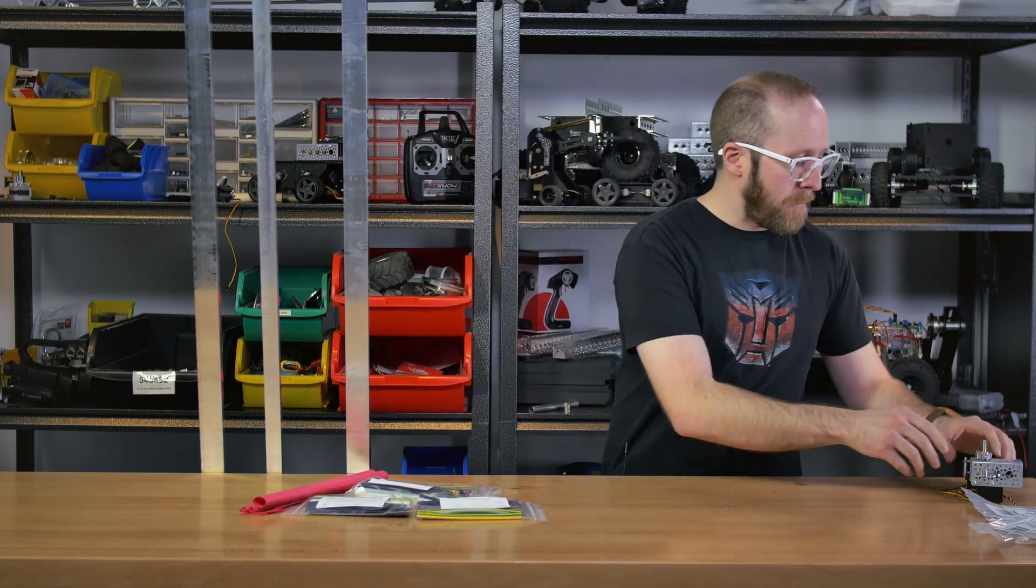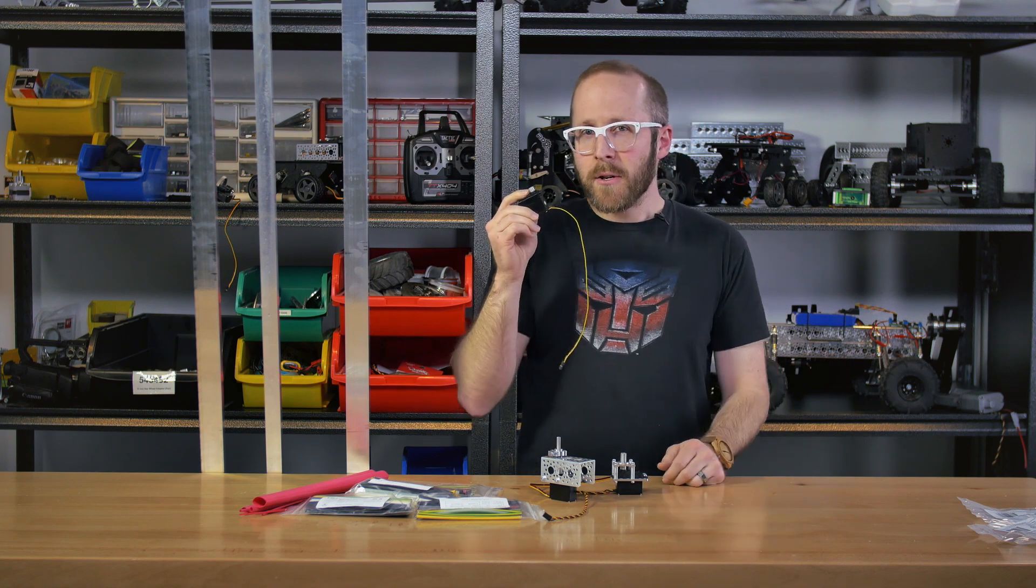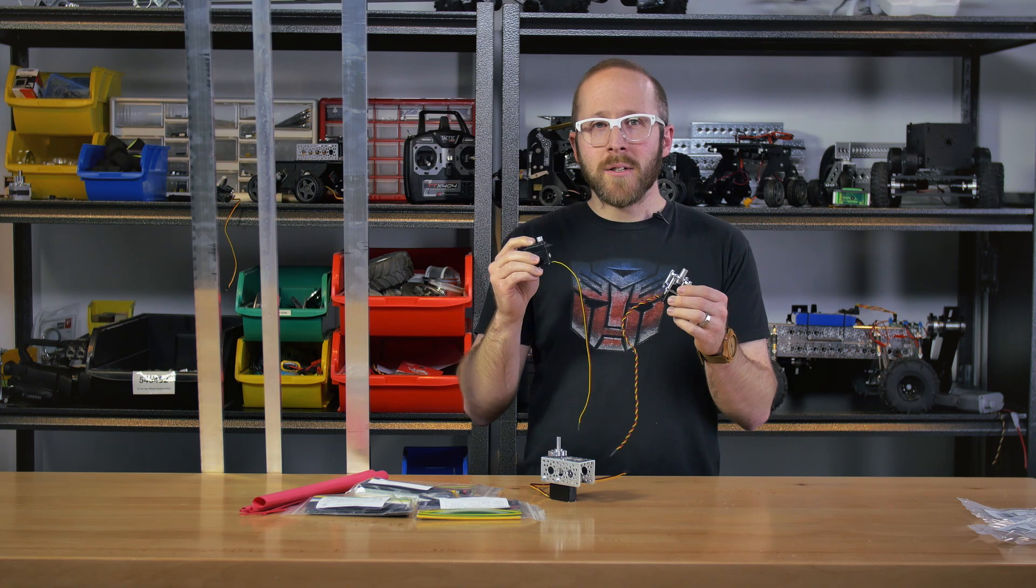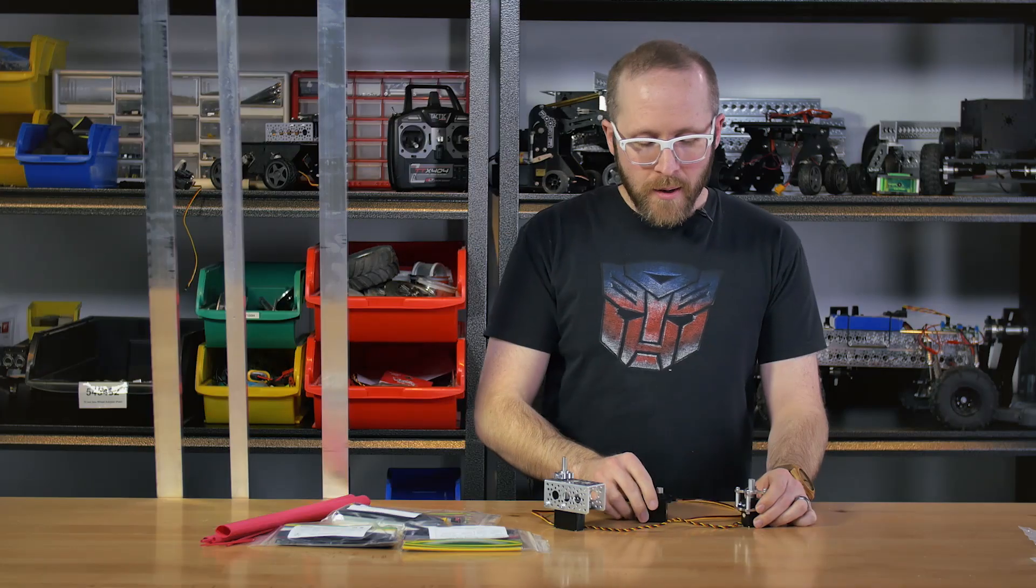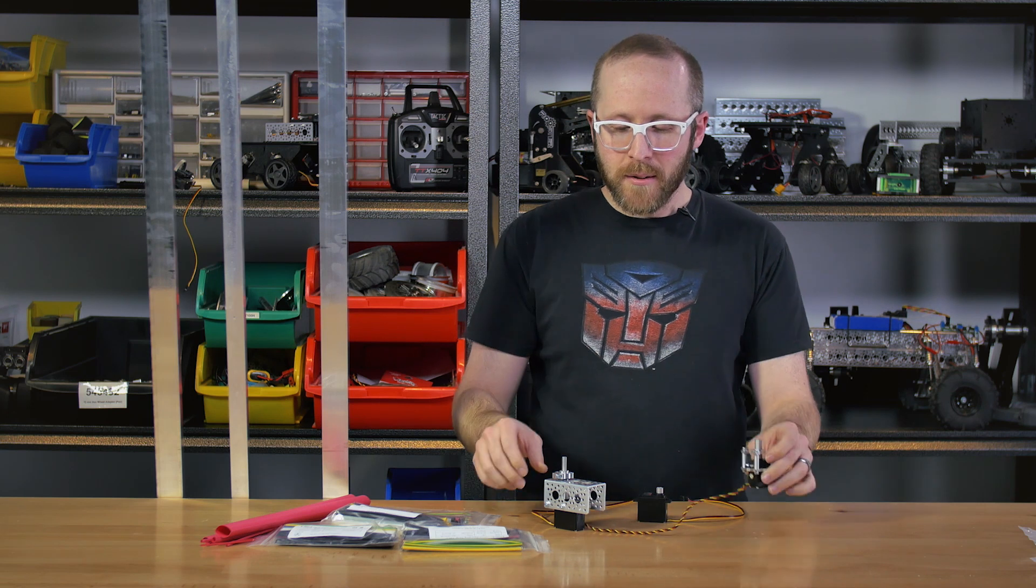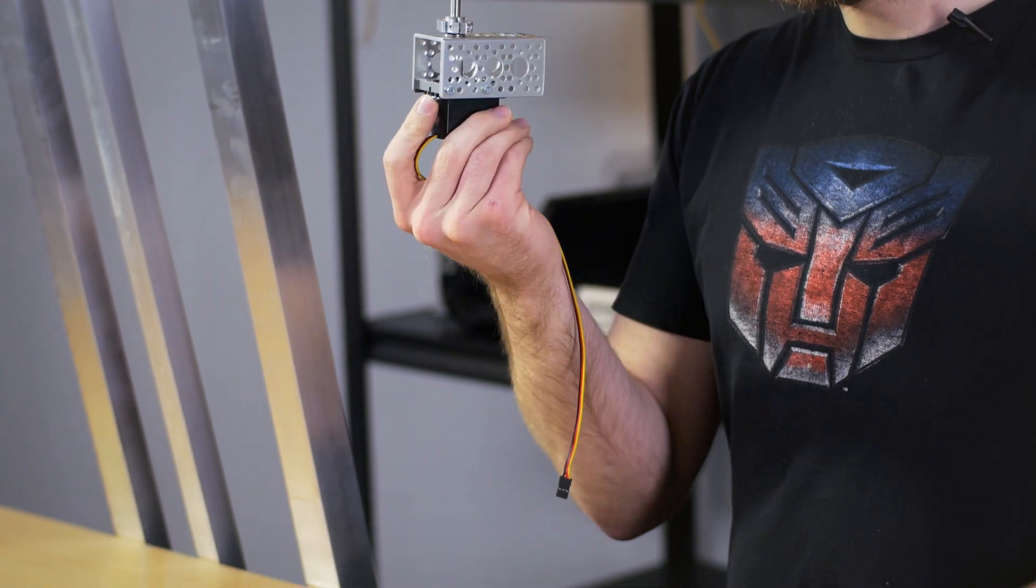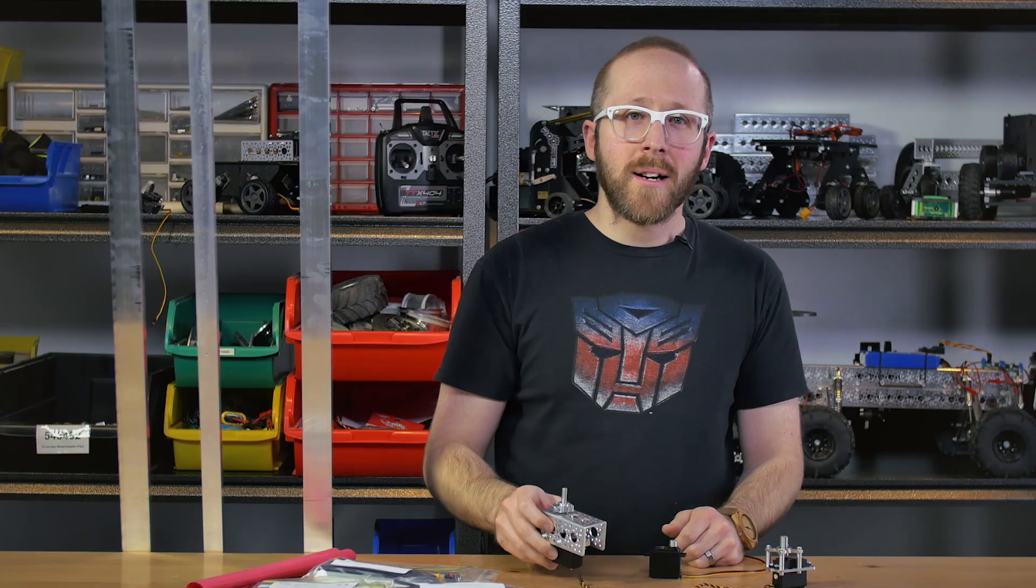And finally, we have servo shafts. We have two different lengths, 0.28 inch and 1 inch, and they're 3 eighths inch in diameter. These will press fit onto the spline of your servo and give you a shaft that you can put through a bearing or put a clamp on. In this case, we're going to a coupler that's connecting it to a quarter inch shaft, so go ahead and pick these up on servocity.com.